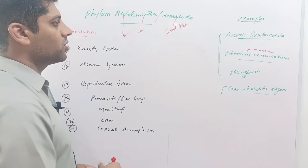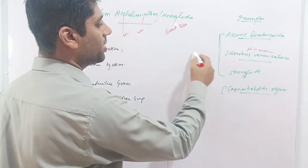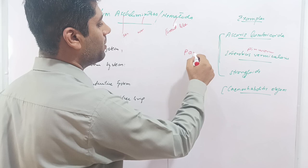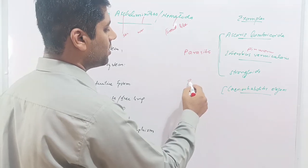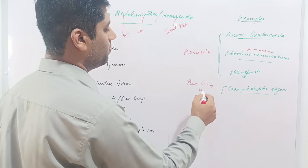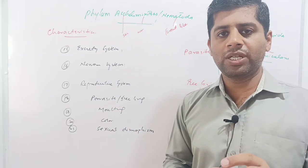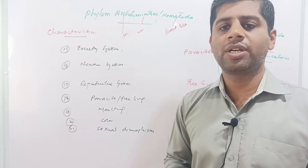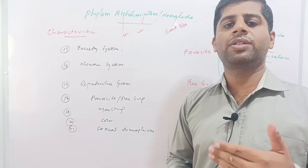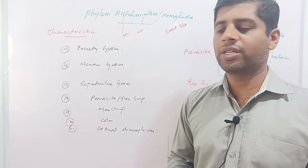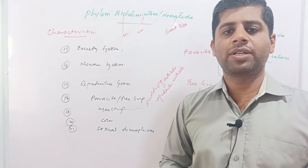Regarding mode of life, some animals are parasites — Ascaris lumbricoides, Enterobius vermicularis, and Strongyloides are all parasites of animals and human beings — while Caenorhabditis elegans is a free-living worm. Regarding molting, since the bodies of these worms are covered by a cuticle layer, they shed and replace the cuticle at various life stages — this process is called molting.